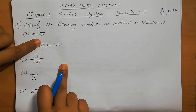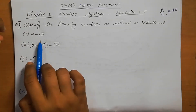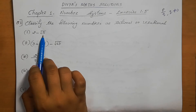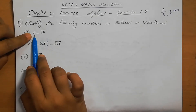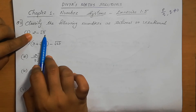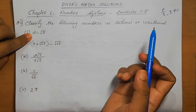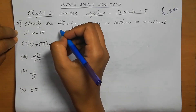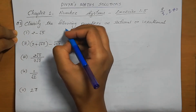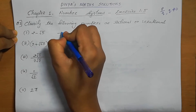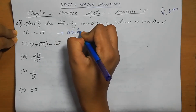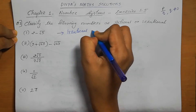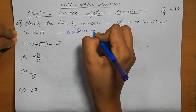The first one is 2 minus root 5. Root 5 is not an integer, which means this is an irrational number. Integer minus irrational number means the answer is irrational. So this is an irrational number.